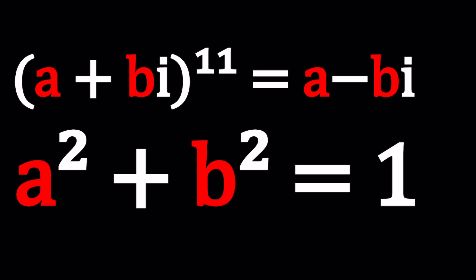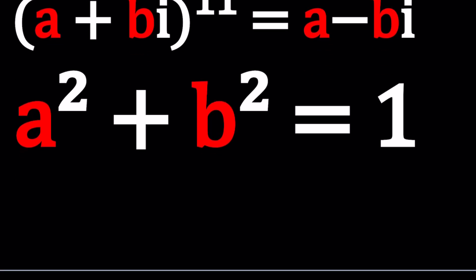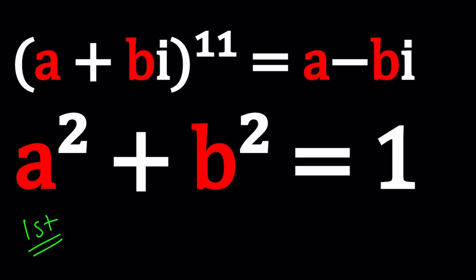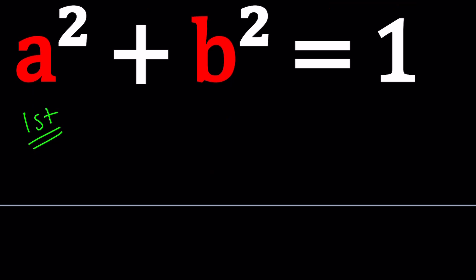The first method, even though it's going to be very painful, I just want to show you what that looks like. First of all, ignore the second equation. What if the only thing you had was (a+bi) to the 11th power equals a minus bi? What would you do? On the left hand side we have something to the 11th power. What is that calling for? The binomial theorem. So you can go ahead and expand it.